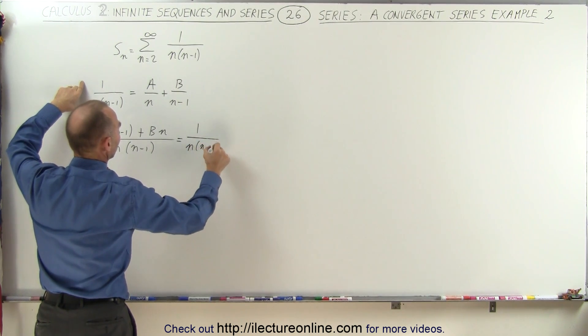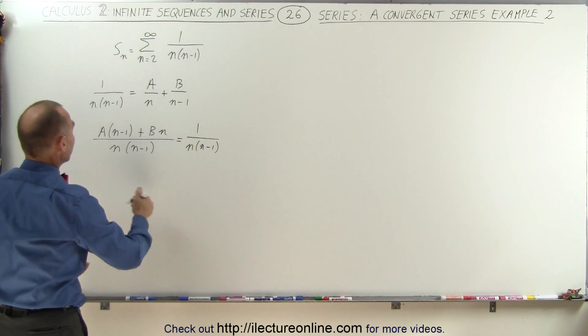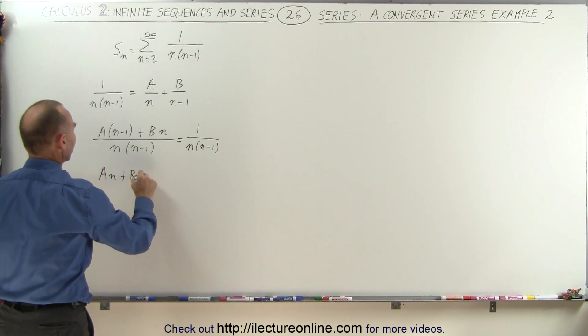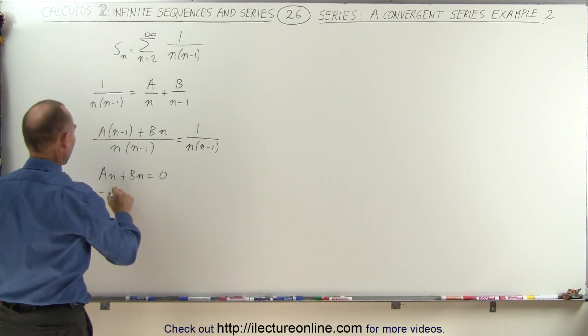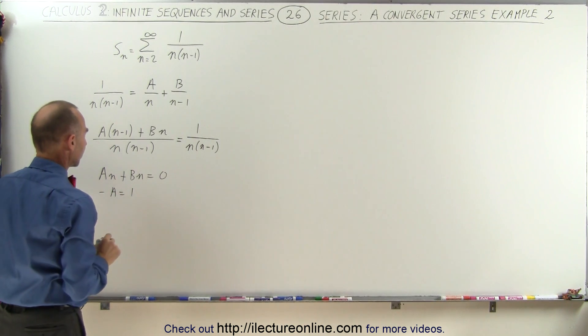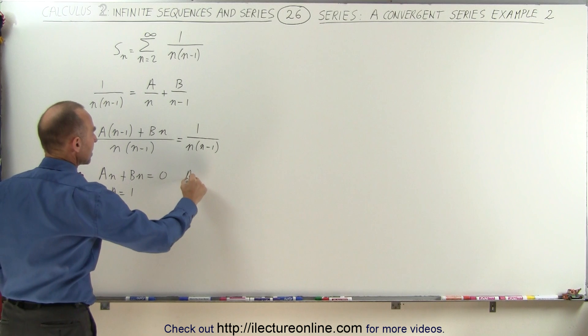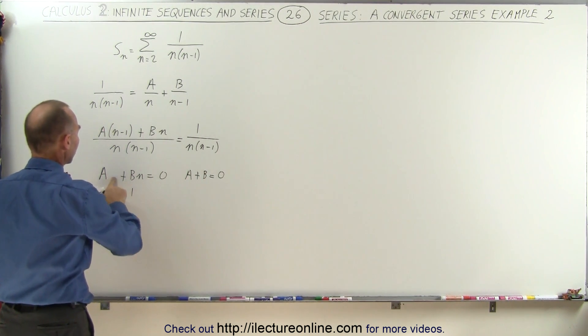This then means, since the denominators are the same, that a times n plus b times n must equal 0 because there's no n term over here, and minus a must equal 1.